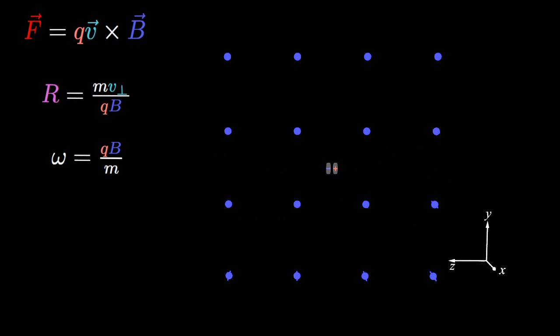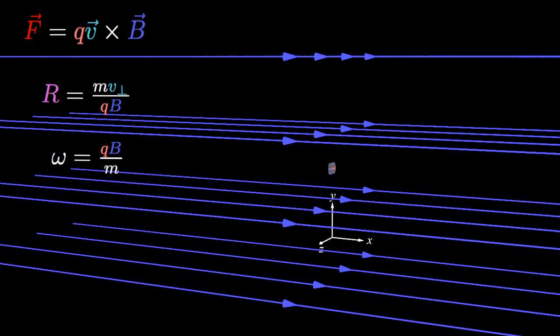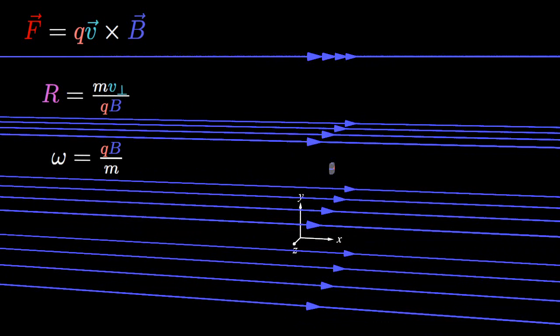Returning to the more general 3D case, the net motion of the charges will be determined by the parallel and perpendicular components of the charge velocity relative to the magnetic field.